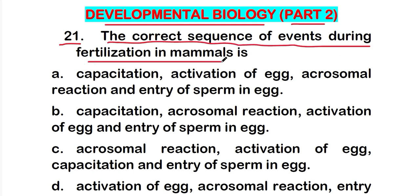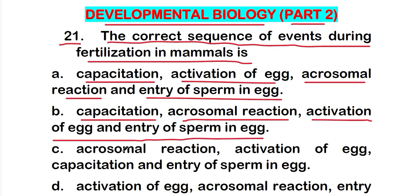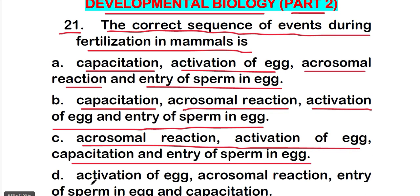Option A: capacitation, then activation of egg, then acrosomal reaction, then entry of sperm in egg. Option B: capacitation, then acrosomal reaction, then activation of egg, then entry of sperm in egg. Option C: acrosomal reaction, then activation of egg, then capacitation, then entry of sperm in egg. Option D: activation of egg, then acrosomal reaction, then entry of sperm in egg, then capacitation.